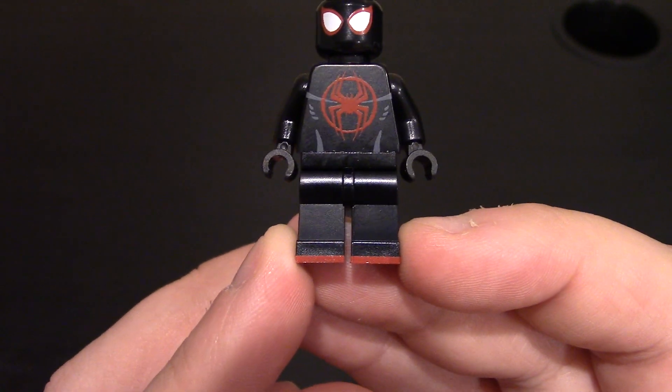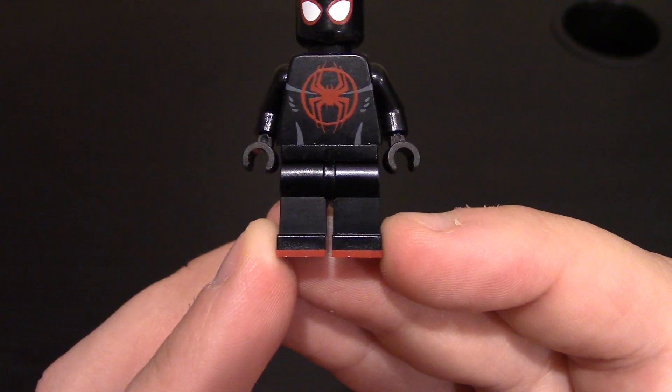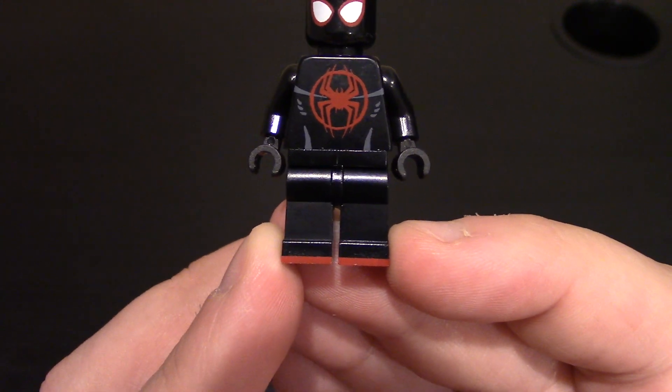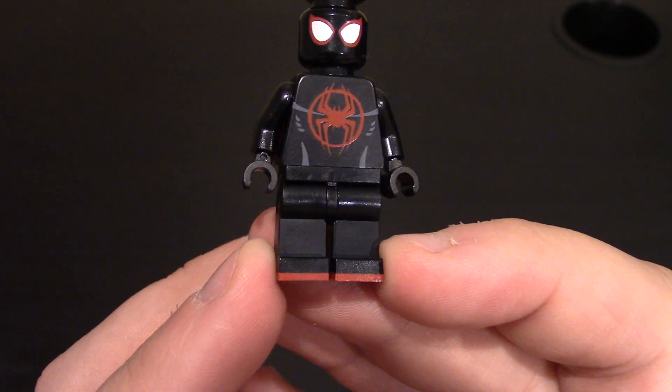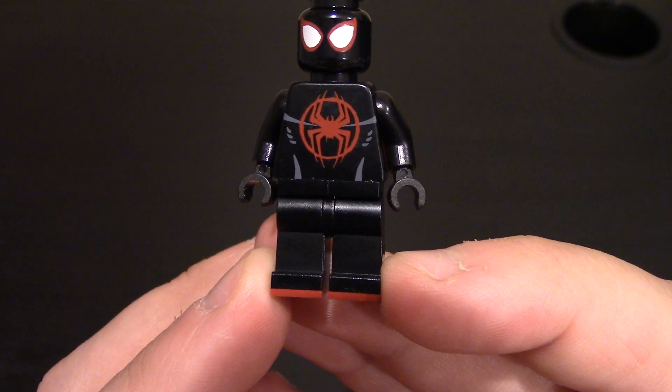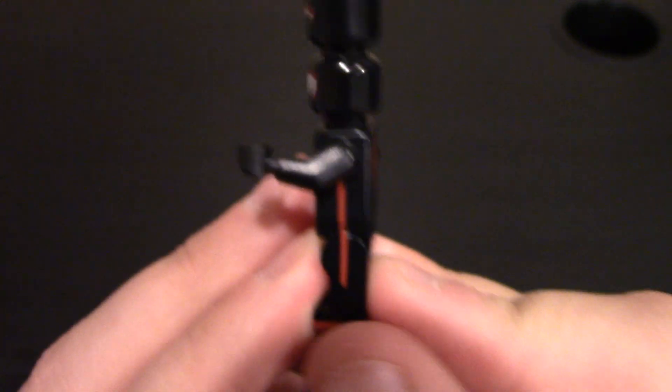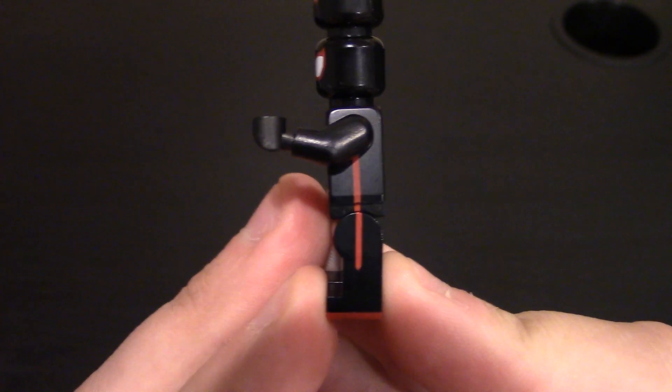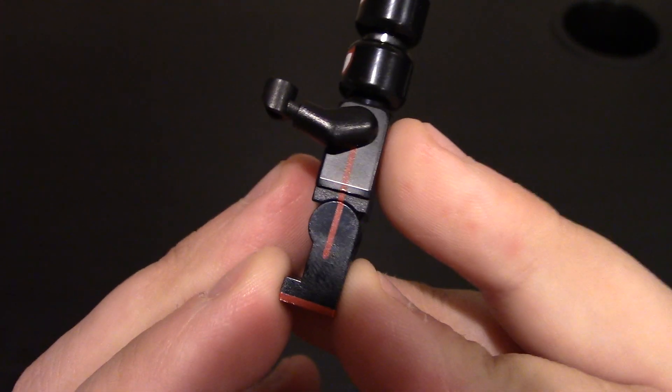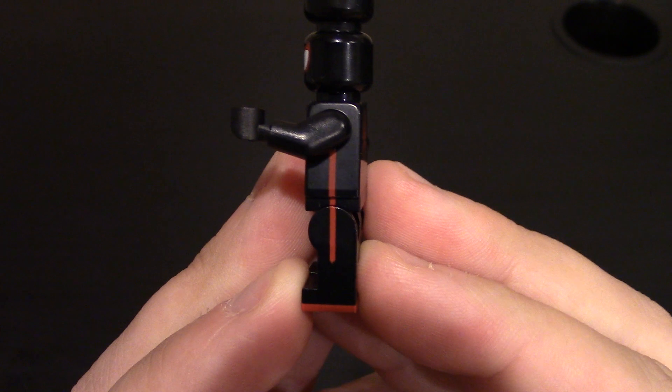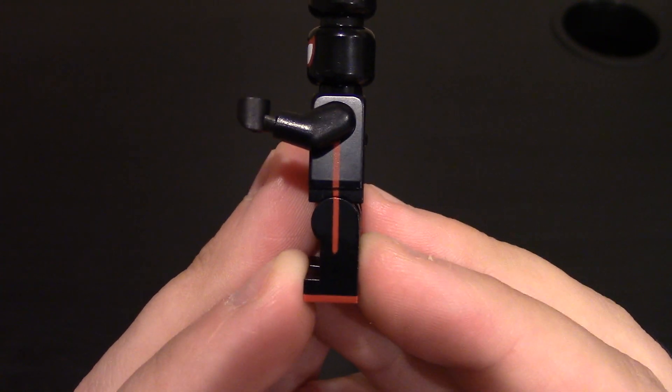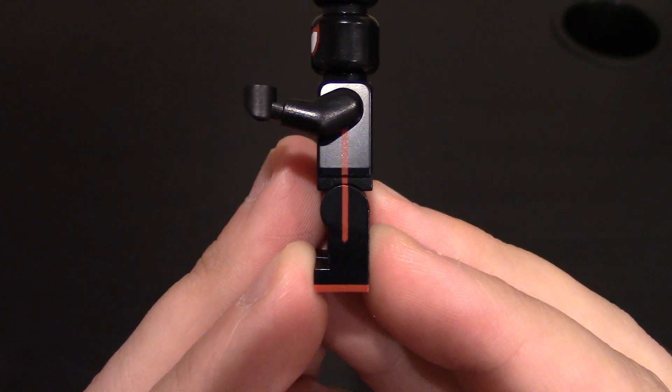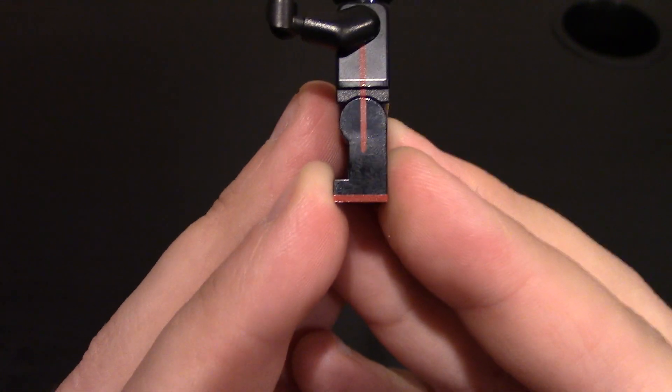Coming down to the waist and legs. Nothing on the upper waist. Nothing on the legs. We do have the red trim on the bottom of the shoes or boots of the suit. Nice little red line at the bottom. Coming over to the side of the minifigure, no printing on the side of the arms or hands, but we do have printing on the side of the body, waist, and legs. That nice little trim line coming all the way down, that red accent. And then we have printing on the lower shoes as well.